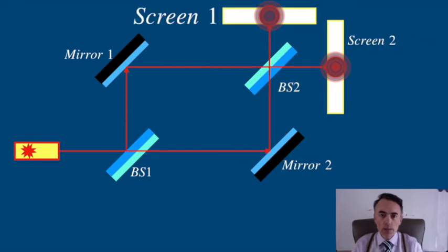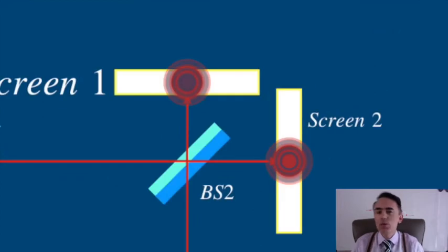Where we will see bright fringes on one screen, we will see dark fringes on the other and vice versa.